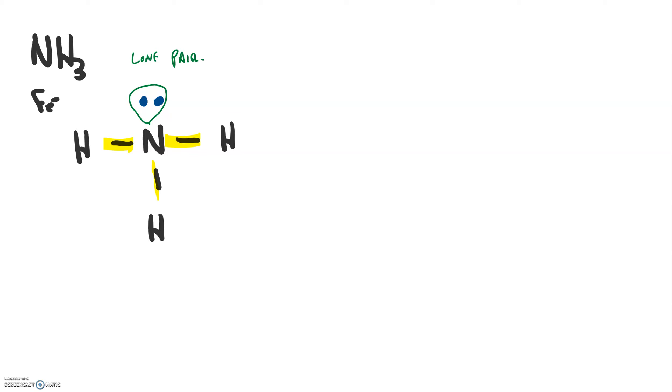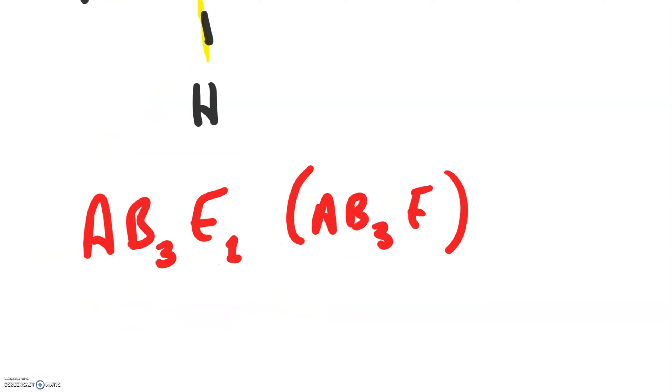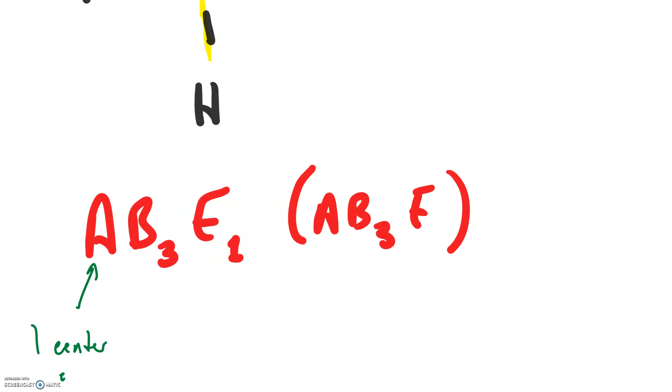Well, all of a sudden this matters because this has a new format. We're going to call this AB3E1. Your textbook will sometimes just refer to it as AB3E, because in chemistry we typically don't use one if there's only one of something. We don't write one.